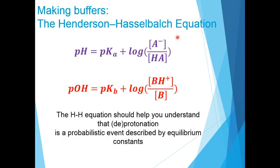The Henderson-Hasselbalch equation can also be derived for pOH using Kb. It allows us to calculate pKa given pH and the molar ratio of proton donor and acceptor; to calculate pH if pKa and the concentrations of proton donor and acceptor are known; and to calculate the molar ratio of proton acceptor to donor if pKa and pH are known. In addition, the equation helps us understand that deprotonation or protonation is a probabilistic event described by equilibrium constants.